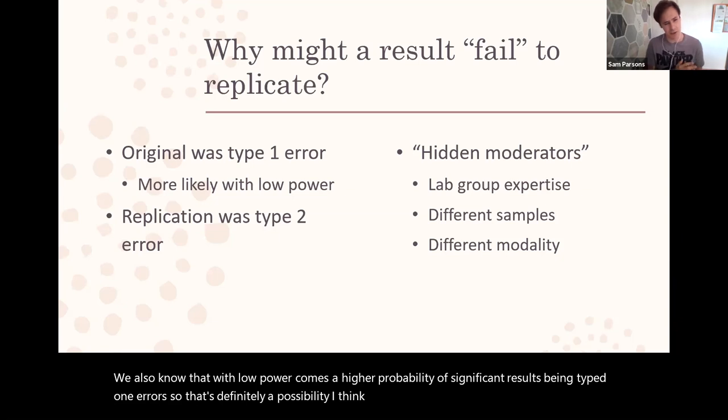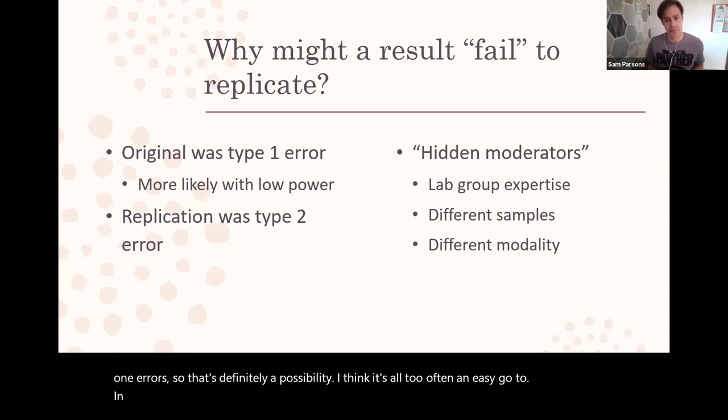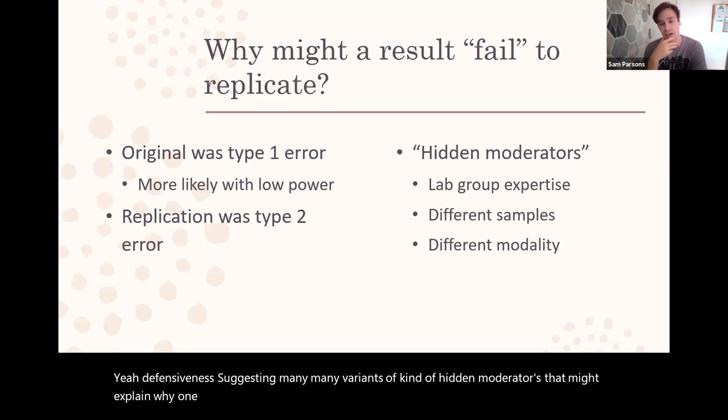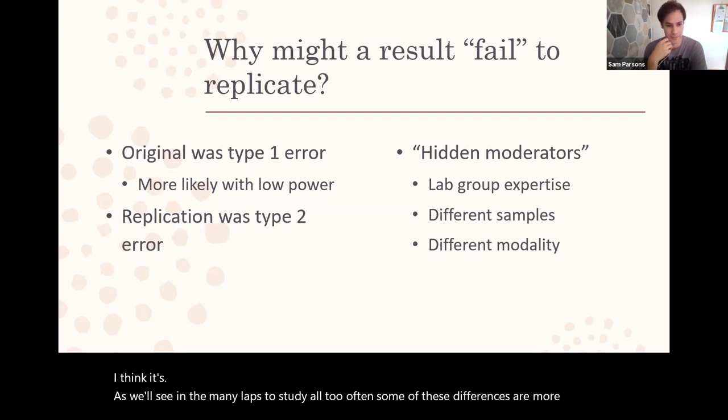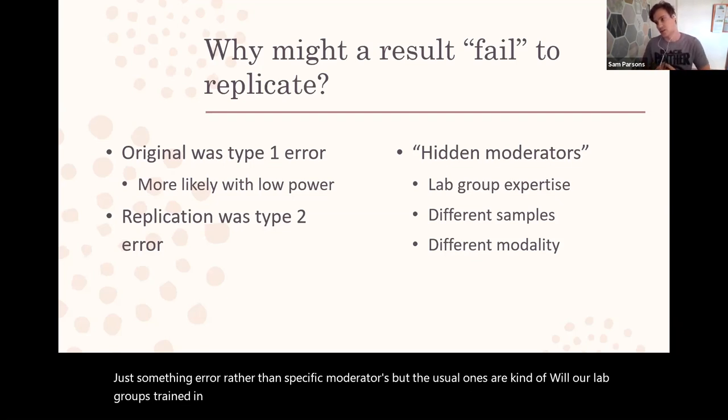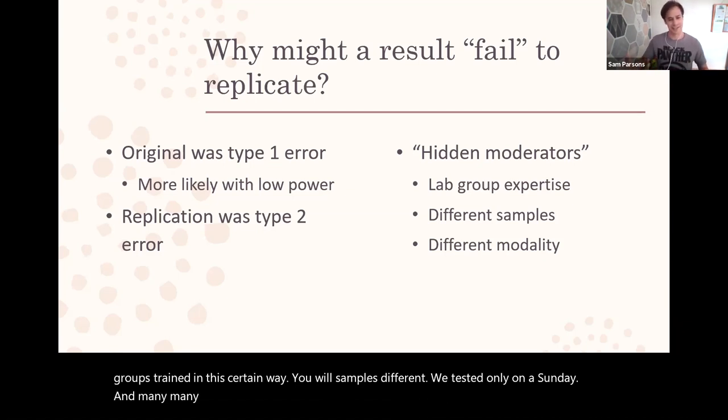Richard Morey had a nice example of if you try and compare an extremely blurry picture, an original picture, to a very highly defined, very clear picture as the replication, if that original is so blurry or the confidence interval is so wide due to low power then actually it's really hard to compare effects in the first place. We also know that with low power comes a higher probability of significant results being type one errors so that's definitely a possibility. I think it's all too often an easy go-to. We also know that type two errors are a thing, false negatives, and that's always a possibility. More often than not, especially in the early days of these replication attempts, sometimes there was defensiveness suggesting many variants of hidden moderators that might explain why one study observed an effect or not.